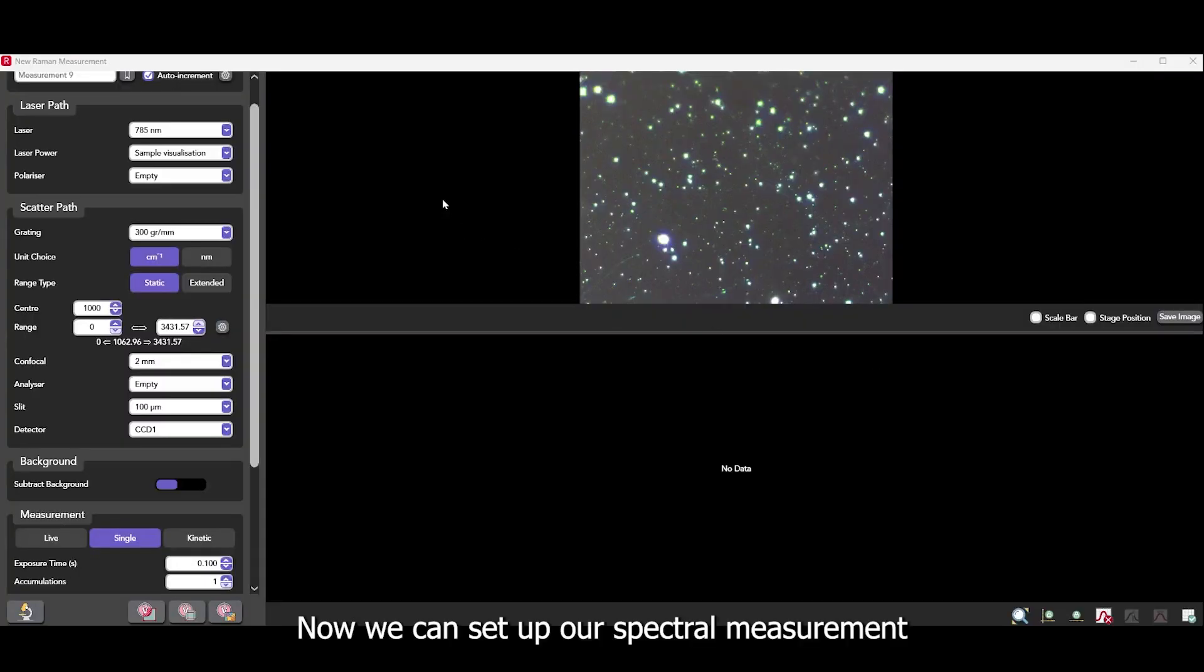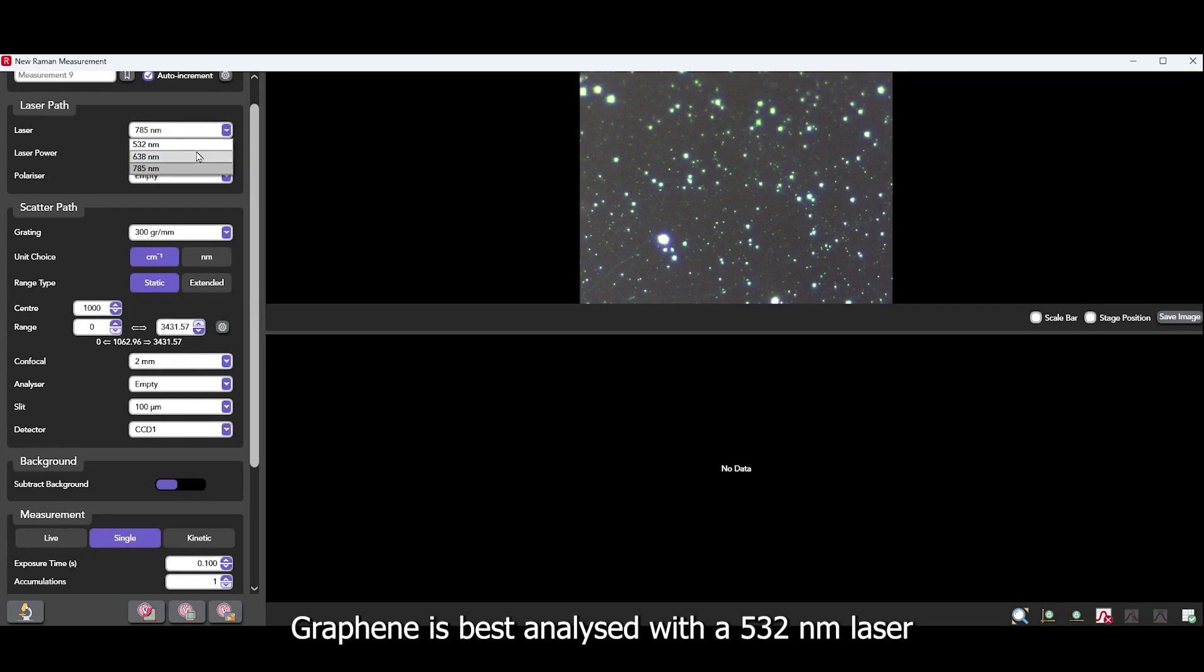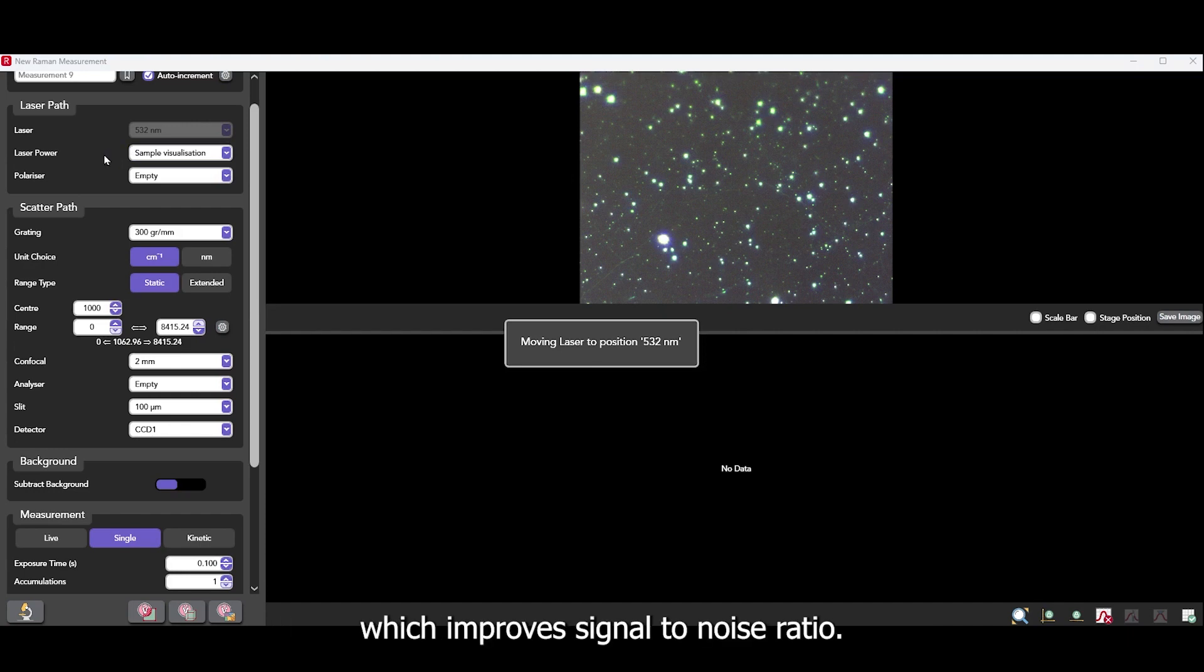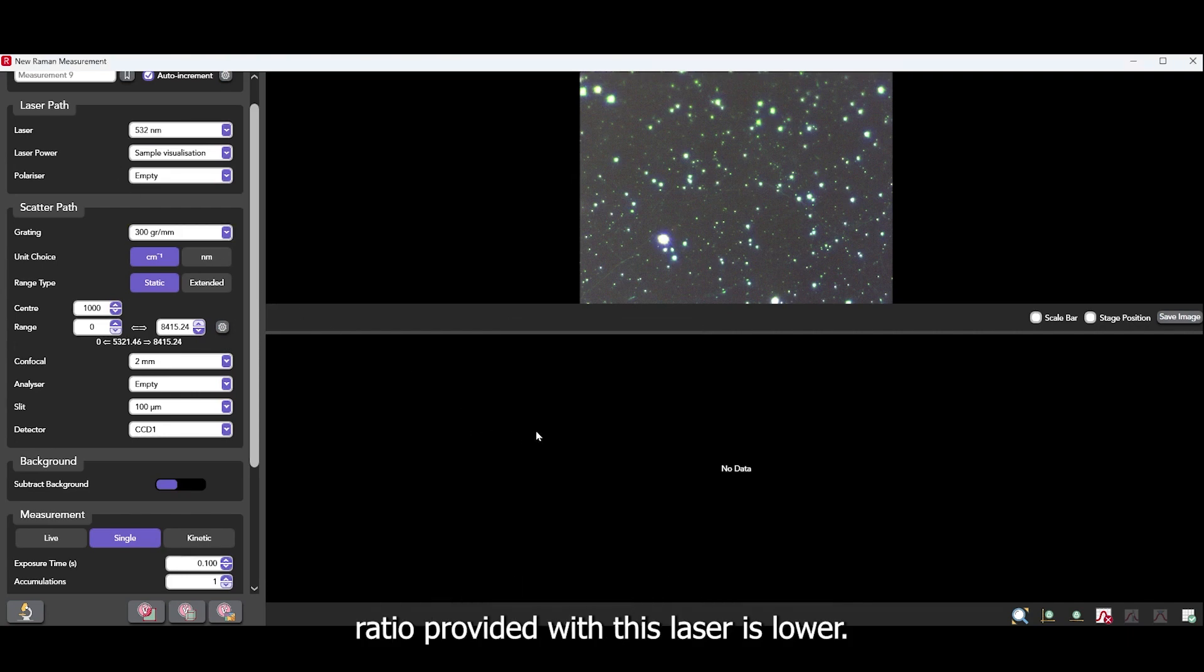Now we can set up our spectral measurement. Graphene is best analyzed with a 532 nanometer laser because of the resonance enhancement provided which improves signal to noise ratio. A 638 nanometer laser may also be used but the signal to noise ratio provided with this laser is lower.